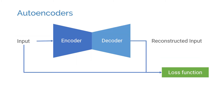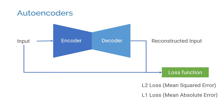A typical choice of loss function for autoencoders is the L2 loss. In this case, the learning algorithm would basically try to minimize the mean squared error between the reconstructed and true inputs. However, using the mean squared error on image sets usually results in blurry reconstructed images. Mean absolute error, on the other hand, usually results in crisper images. This might be one of the few domains where L1 loss actually does better than L2.